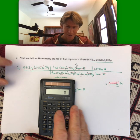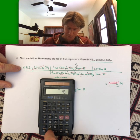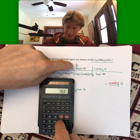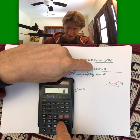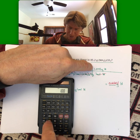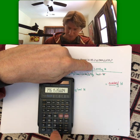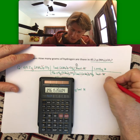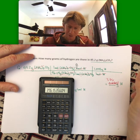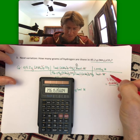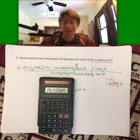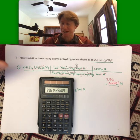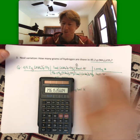All right, so 45.2 divided by 96.9 times 8 times 1.008. All right, I think I feel happier now. 3.76 grams. See, I just wasn't even thinking, and I wrote one there. So easy to do. So I'm glad I caught it as part of this video.